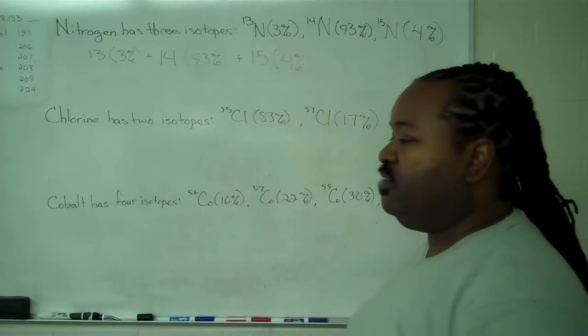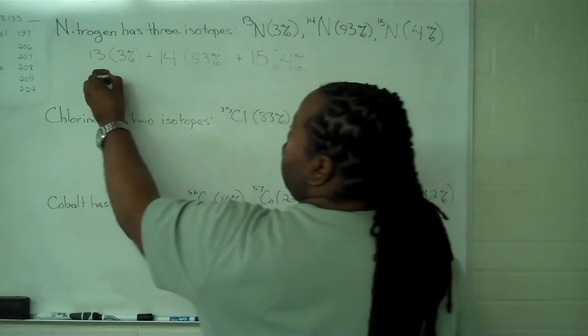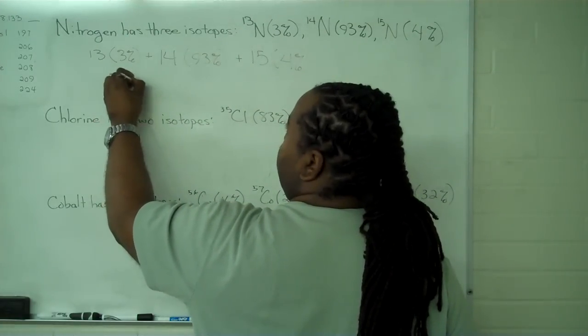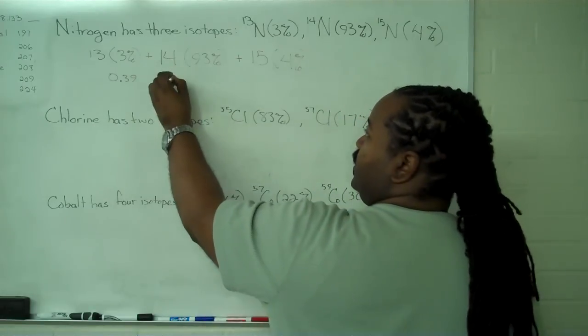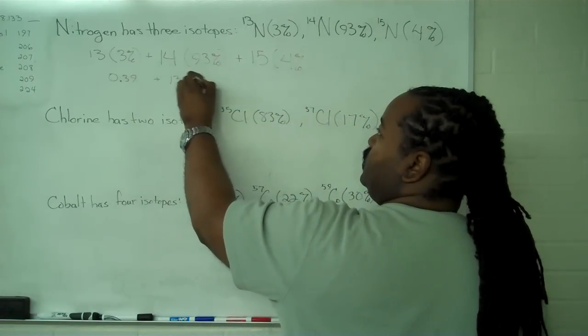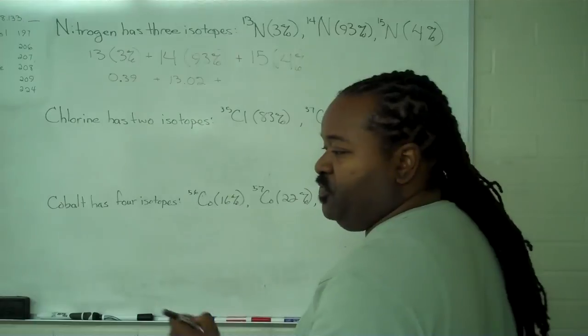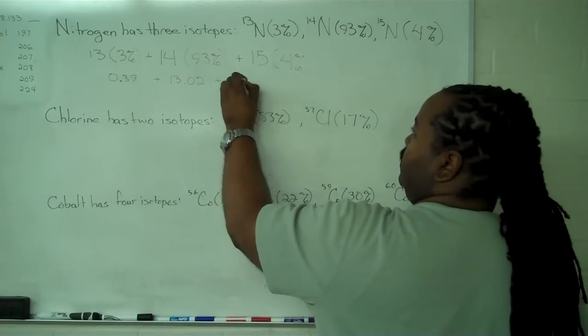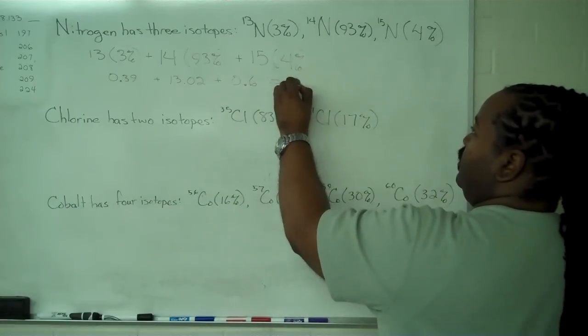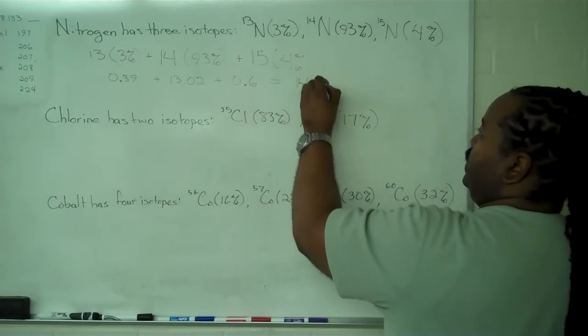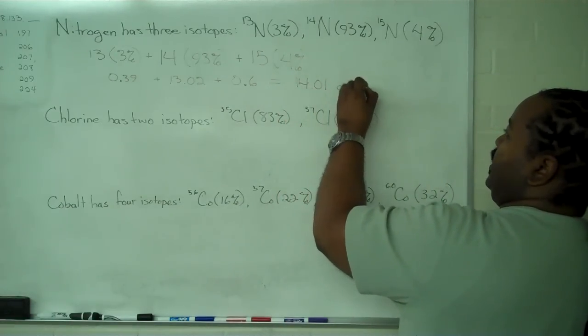So once we have these values, we can do the multiplication. Here we get 0.39. Here, for nitrogen 14, we'll get 13.02. And for nitrogen 15, we get 0.6. This adds to a weighted average of 14.01 atomic mass units.